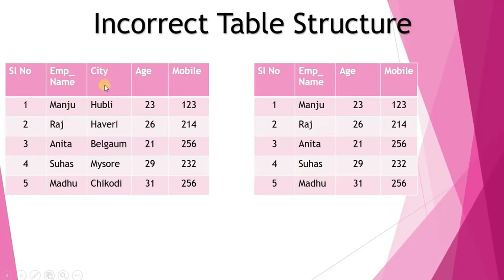In the target table, you can observe clearly that one column is missing — the city column. The target has serial number, employee names, age, and mobile, but city is absent. We also need to verify the data types of the column names in both the source table and target table.